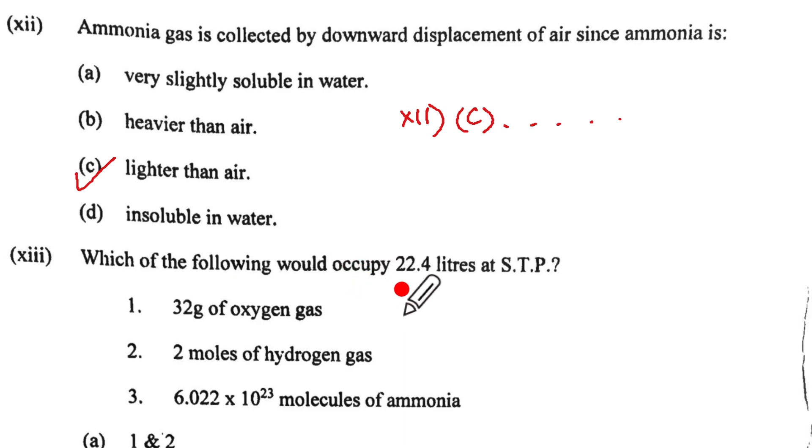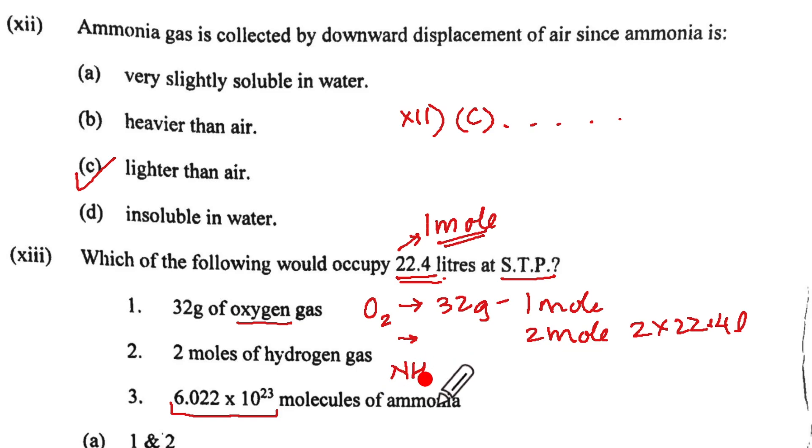Thirteenth one, which of the following would occupy 22.4 litres at STP? Now 22.4 litres means it must be the one mole of the substance. Let us look at oxygen gas, the formula is O2 and its gram molecular mass is 32 gram which means it is going to be one mole, two mole of hydrogen gas which means it is going to have 2 into 22.4 litres and 6.023 into 10 to the power 23 molecules of ammonia. Now this is the Avogadro's number. This also means that ammonia with 6.022 into 10 to the power 23 constitutes one mole of it.